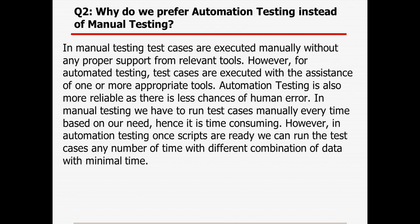Next question is: why do we prefer automation testing instead of manual testing? In manual testing, test cases are executed manually without any proper support from any relevant tools. However, for automation testing, test cases are executed with the assistance of one or more appropriate automation tools. Automation testing is also more reliable as there is less chance of human error. In manual testing, if we have to run the test cases multiple times, every time we need to run it manually, so huge effort is required. However, in automation testing, once we develop the test script, we can run it multiple times with different data permutation combinations and so less time will be required.